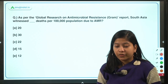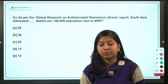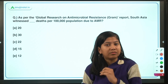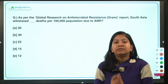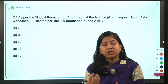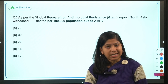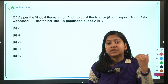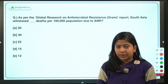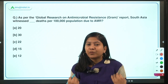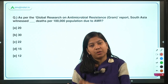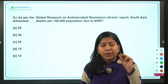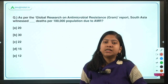The first question is: as per the Global Research on Antimicrobial Resistance (GRAM) report, South Asia witnessed how many deaths per 1 lakh population due to AMR? This GRAM report is the world's first comprehensive report on antimicrobial resistance, published in the prominent journal The Lancet. Sub-Saharan Africa and the South Asian region have witnessed the highest number of deaths due to AMR and are the most affected regions.